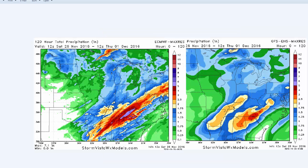If we look at the precipitation maps, this is the European on the left-hand side for the next five days. Usually the European is drier than the GFS, but that's not what we're seeing here. Look at the rainfall over the mountains of Tennessee — five to six inches of rain there. A lot of two to four-inch rains over northern Alabama, northwest Georgia, Tennessee, Kentucky, western West Virginia, and western North Carolina. The GFS on the right-hand side is similar as well. Impressive rain, to say the least.